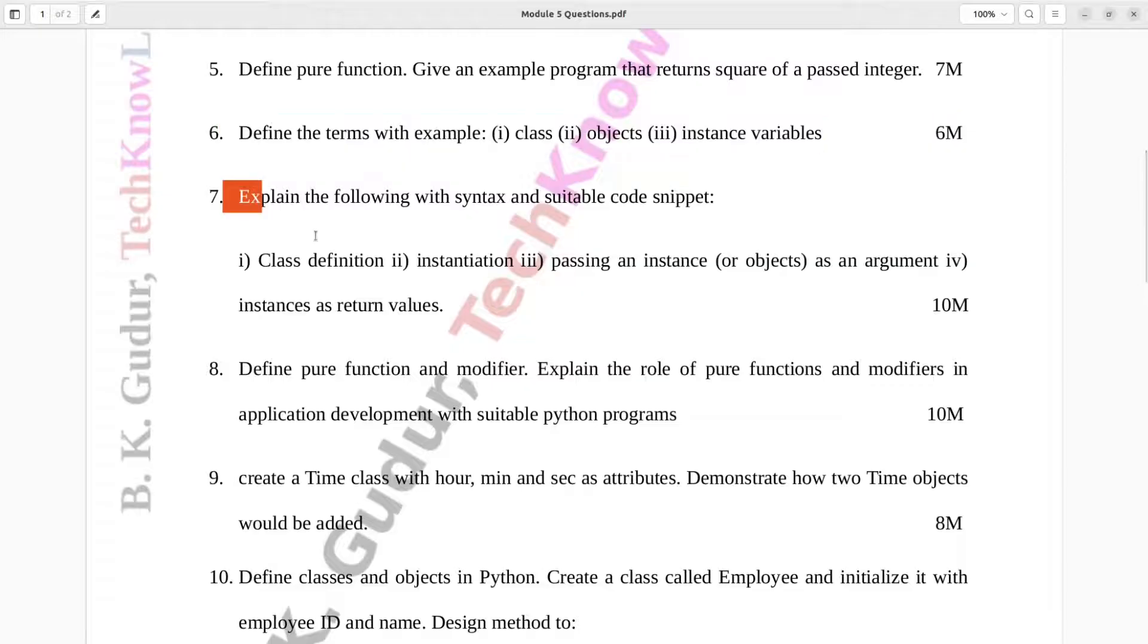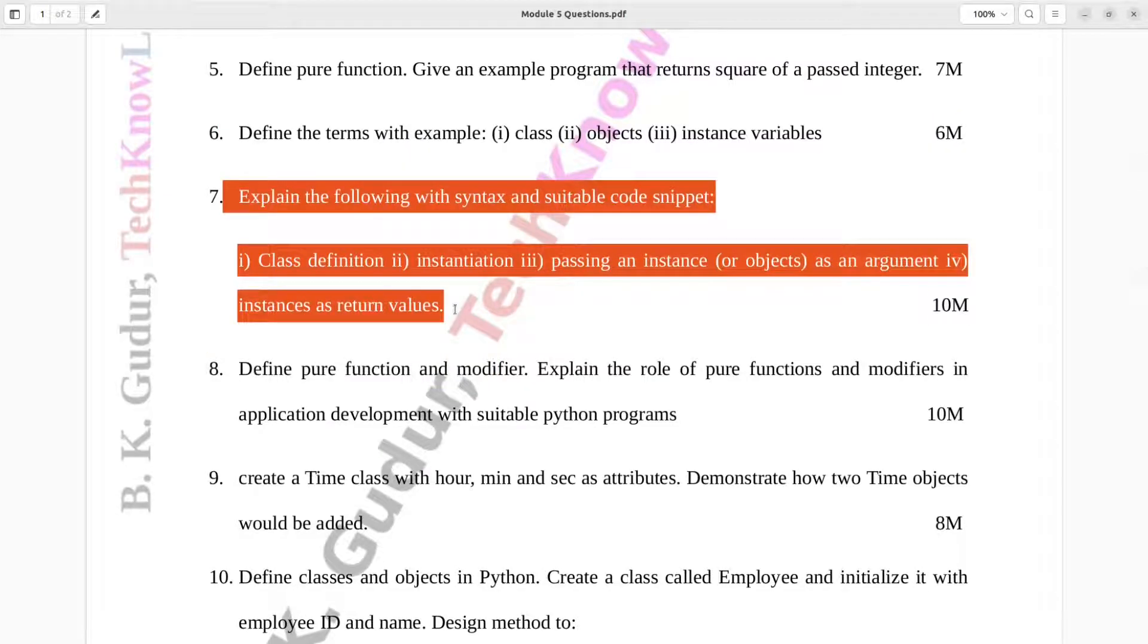Question number seven. Explain the following with syntax and suitable code snippet: one class definition, two instantiation, three passing an instance or objects as an argument, four instances as return values. Ten marks.